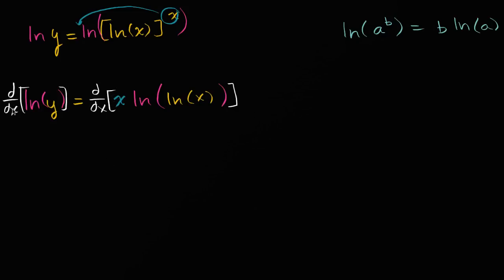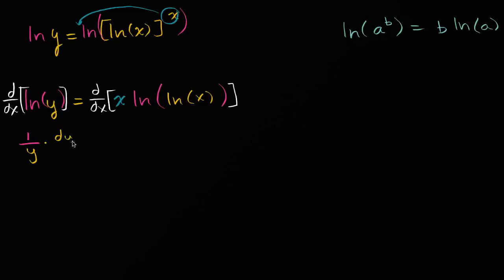On the left-hand side, this is essentially an application of the chain rule. When you learn implicit differentiation, it's really just an application of the chain rule — the derivative of the outside function with respect to the inside function. The derivative of the natural log of y with respect to y is just one over y, times the derivative of the inside function with respect to x: dy/dx.